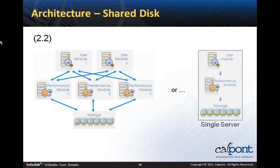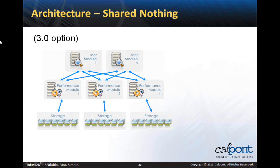Now, a quick overview of the architecture of InfiniDB. There are two main components: a user module, responsible for processing the query received from the MySQL front-end and breaking it into small discrete tasks, and the performance module, responsible for performing these tasks. Scaling up the number of user modules improves concurrent operations but will not improve the speed of a single query, which can be sped up by increasing the number of performance modules. In version 2.2, performance modules use a shared storage system so any performance module can access any piece of data. InfiniDB can also run on a single server with both modules on the same machine. In version 3.0, there is also a shared nothing option, in which each performance module has its own storage, and in every query, each performance module retrieves data from its own storage system.